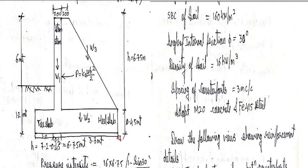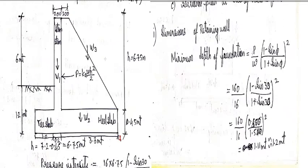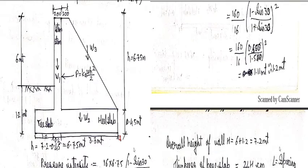So the density of the soil is 16 kilonewton per meter cube. So 160 divided by 16 into 1 minus sin phi. Phi is the angle of internal friction and it is given as 30 degrees. If the angle of internal friction is not given we can assume anything between 30 to 45 degrees. So substituting we got it as 1.11 meter, rounding off to 1.2 meter.